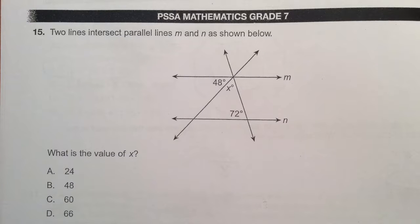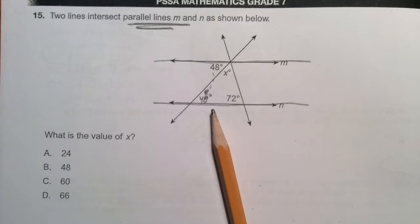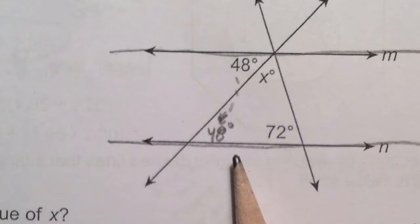In number 15, parallel lines create relationships between certain angles. If you could see there's a triangle in the middle of those three, actually four lines, and the 48 degree angle actually is also in the triangle, 48 degrees.